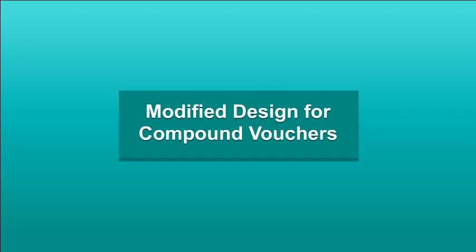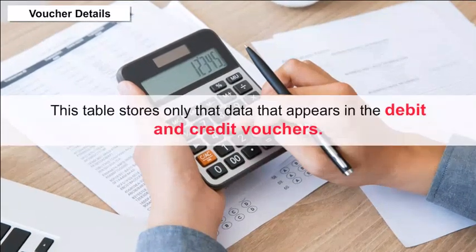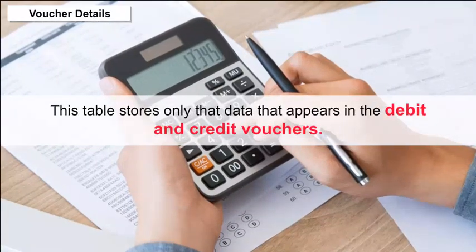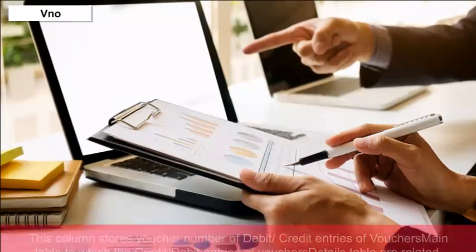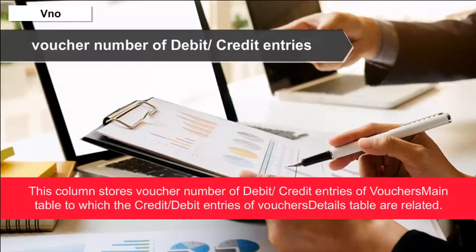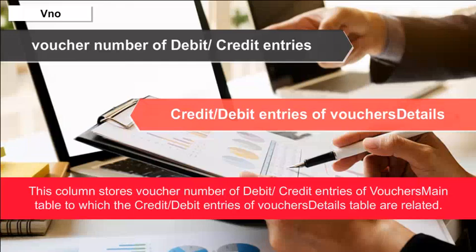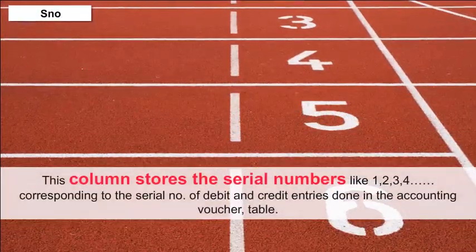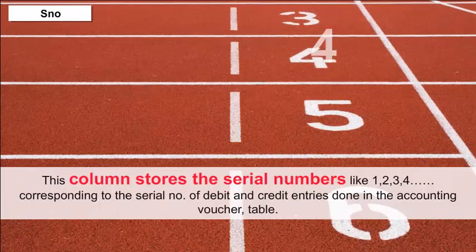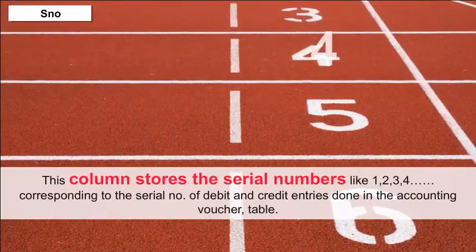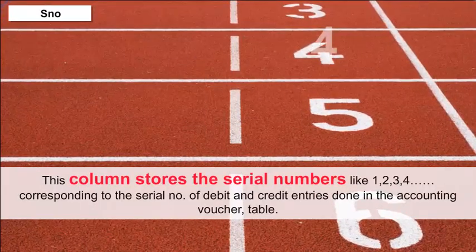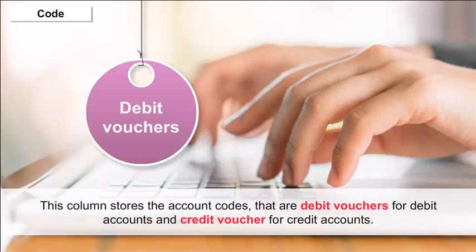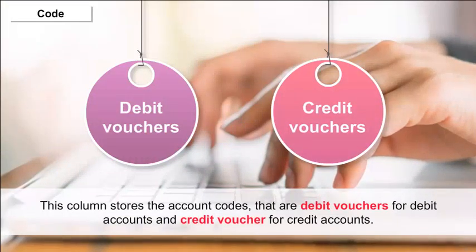Voucher Details: This table stores only the data that appears in debit and credit vouchers. It consists of V Number, which stores the voucher number of debit or credit entries of the vouchers main table. Serial Number: Stores the serial numbers like 1, 2, 3, 4 corresponding to debit and credit entries in the accounting voucher table. Code: Stores the account codes that are debit vouchers for debit accounts and credit vouchers for credit accounts.